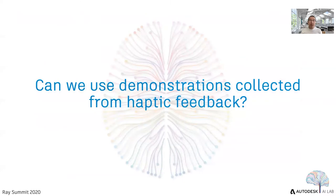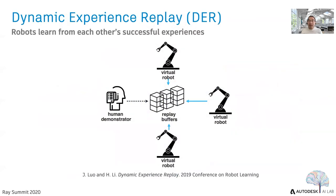We then asked: can we use demonstrations collected from haptic feedback as the demonstrations in the replay buffer? That resulted in the second project, Dynamic Experience Replay. The core idea is that robots learn from each other's successful experience — augmenting human demonstrations with successful transitions generated by agents during training. It can be seen as oversampling the underrepresented class in an imbalanced dataset in supervised learning. This work was published at the 2019 Conference on Robot Learning.